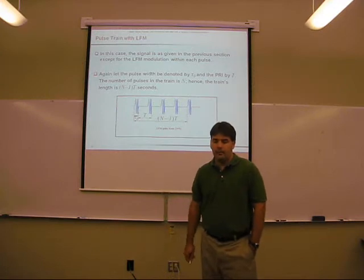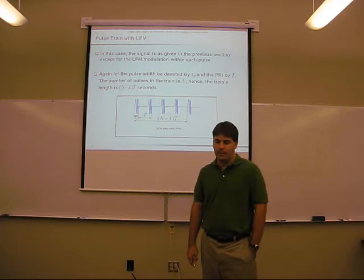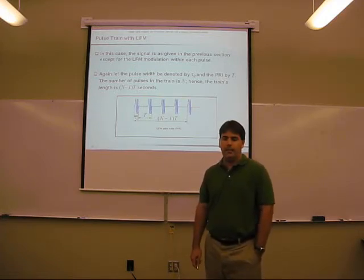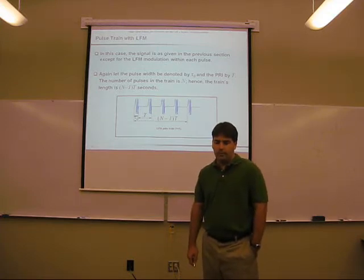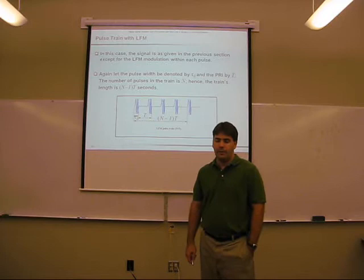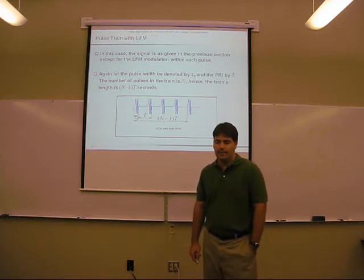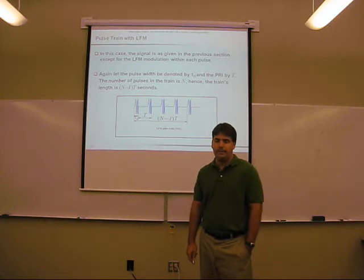In this case, we will be analyzing the pulse train with linear frequency modulation. This signal was given in the previous section except that LFM modulation has been added to each pulse. The pulse width will be denoted by tau zero. The radar PRI denoted by T. The number of pulses in the train is N. Therefore, the train's length is N minus one times T seconds.